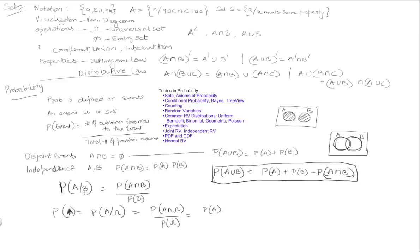So this clarifies that we've always been conditioning on the universal set — the universe of all possibilities. Here, we are limiting the universe to just be the universe of the occurrence of B. That is our definition.